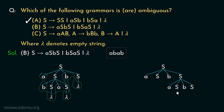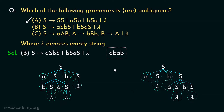From all three remaining S's we derive lambdas. The yield is again 'abab' — we derived the intended string in a different way. So grammar B is also ambiguous.